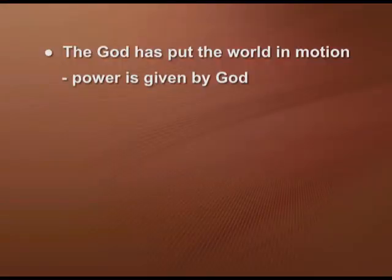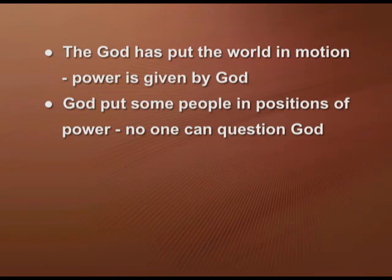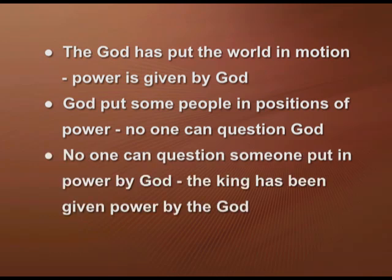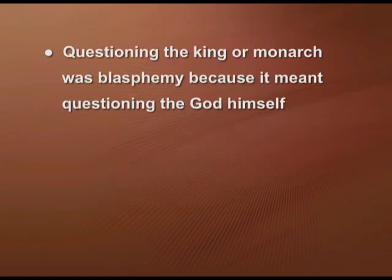Despite the minority being a small percentage of the total population of France, each estate had one vote. Under the old regime, France was a monarchy — the monarch ruled by divine right. The divine right is a set of ideas wherein it is believed that God put the world in motion, that power is given by God, and that no one can question someone put in power by God. Questioning the king or the monarch was a blasphemy because it meant questioning God himself.